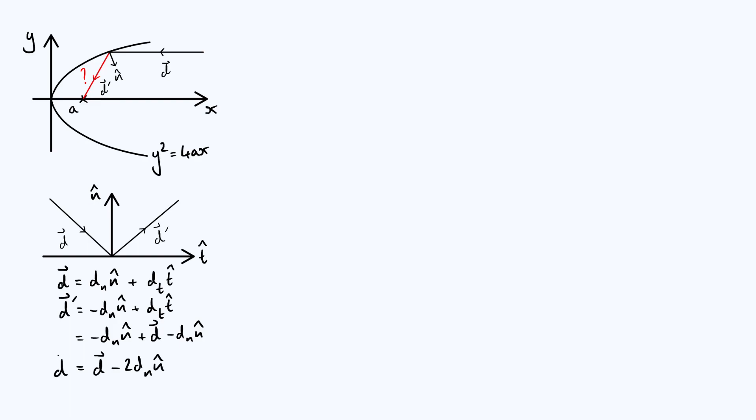So this is good because we now have a relation between the incoming vector d and the reflected vector d' that only depends on the normal vector to the parabola. Now we can use vector notation to take that a little bit further and use the dot product. So specifically it's going to be d' = d - 2 times, if we want the component of d in the n direction, we just have to dot d with the n̂ vector like that, so -2(d·n̂)n̂.